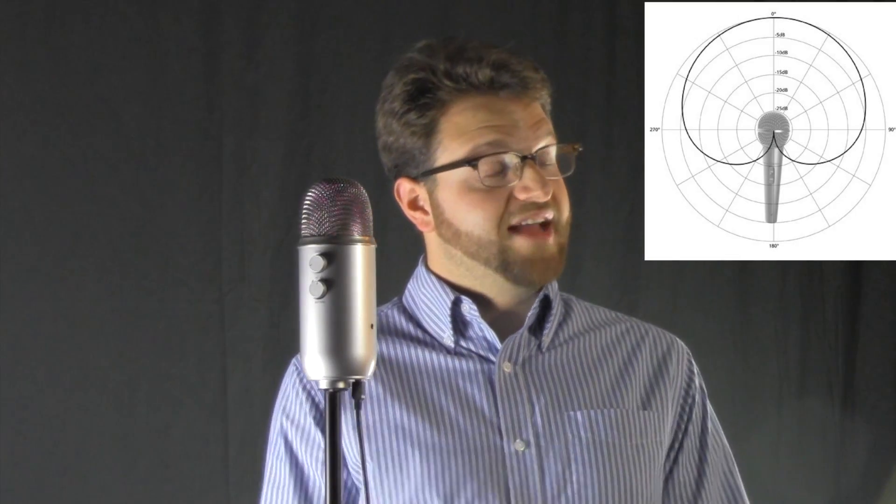So a polar pattern or a pickup pattern on a microphone relates to how the microphone picks up sound 360 degrees around the capsule. Now your typical microphone has what's called a cardioid pattern which means that it picks up sound from the front but not from the back. And we're going to demonstrate this by rotating the microphone as I speak.